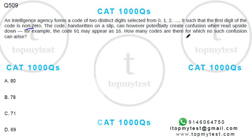For instance, code 91 may appear as 16. How many codes are there for which no such confusion can arise?